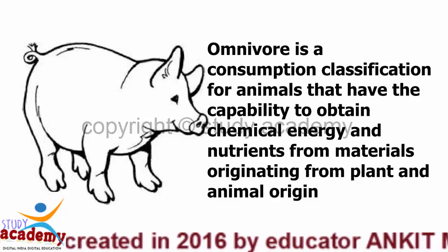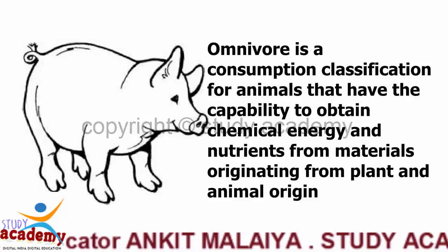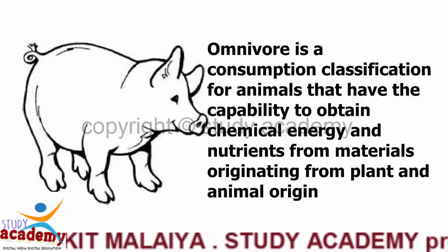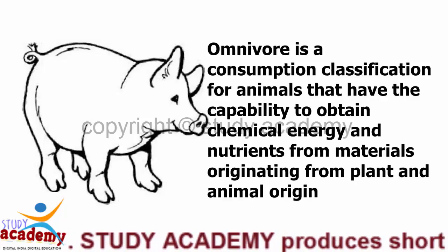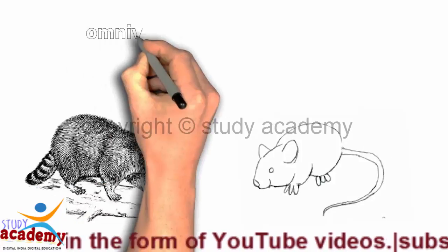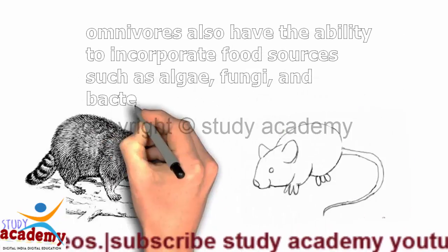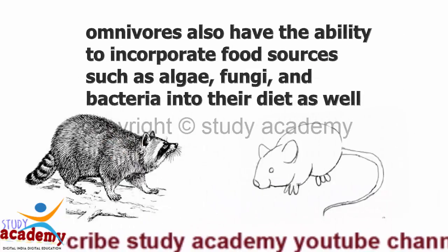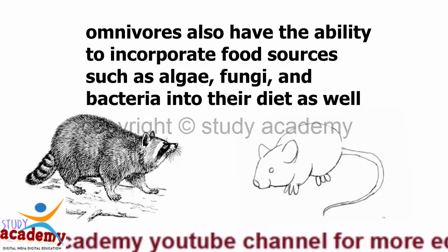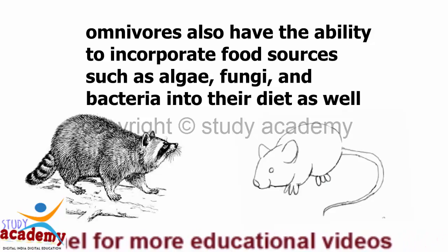Omnivore is a consumption classification for animals that have the capability to obtain chemical energy and nutrients from materials originating from plant and animal origin. Omnivores also have the ability to incorporate food sources such as algae, fungi, and bacteria into their diet as well.